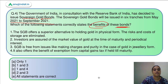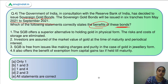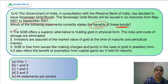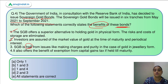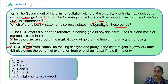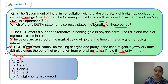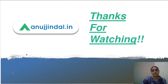Back to the question on benefits of sovereign gold bonds: all four statements are correct — they offer a superior alternative to physical gold by eliminating storage costs and risks; investors are assured of market value at maturity plus periodical interest; they are free from making charges and purity issues; and they offer exemption from capital gains tax if held till maturity. So the answer is option E — all statements are correct. Thank you so much, I hope you found this session useful.